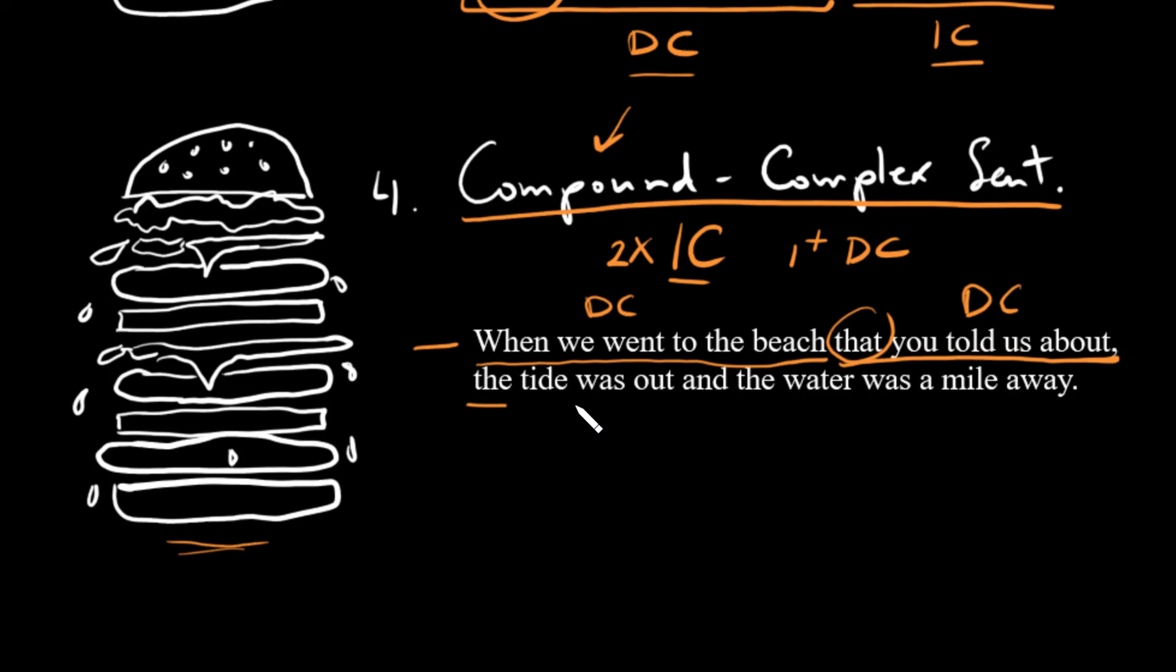Then we have the tide was out. There is our independent clause. We have our coordinating conjunction, and as you can see, unlike other conjunctions, coordinating conjunctions are not included when you're trying to figure out if a clause is dependent or not. And then we have our last independent clause here, and now we can see that we do have a compound complex sentence.